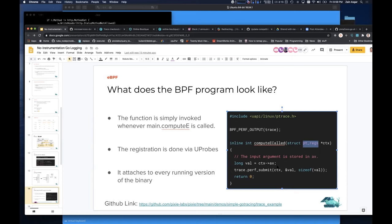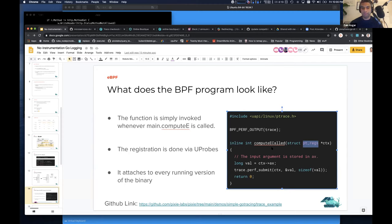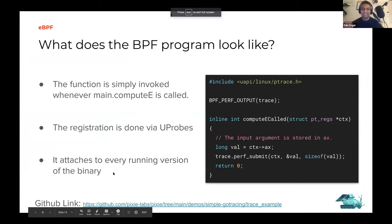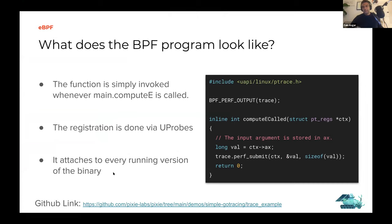The register here is actually the register on the processor — this is literally the CPU register. It's a little bit different because it's the CPU register state when the function was called, since the register file has already been mutated because you're in a different function. This function will run every single time main.computeE is called. The registration is done using uprobes. It will attach to every running version of the binary because you're effectively patching that instruction in the binary and calling this function every time it happens.